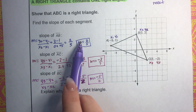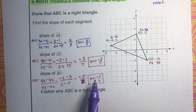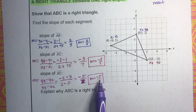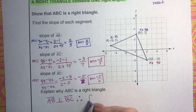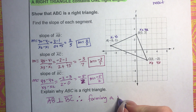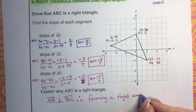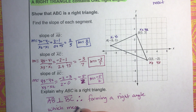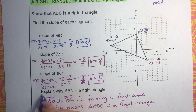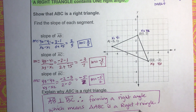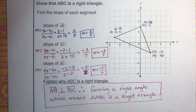It looks like we have two slopes that are perpendicular. AB has slope positive 2 fifths and BC has slope negative 5 over 2. They have opposite signs, and 2 fifths and 5 over 2 are reciprocals of each other. Multiplying them together gives negative 1. Therefore, line segment AB is perpendicular to line segment BC, forming a right angle, which means triangle ABC is a right triangle.